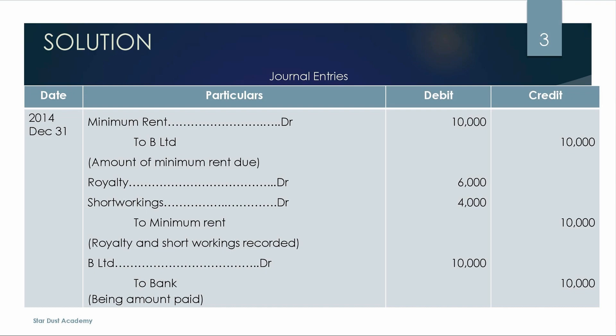In the first year, we have 600 tons. Royalty is 600 tons into Rs.10 = Rs.6,000. The minimum rent is Rs.10,000. Since royalty Rs.6,000 is less than minimum rent Rs.10,000, the short working is Rs.4,000. We pay the minimum rent of Rs.10,000.